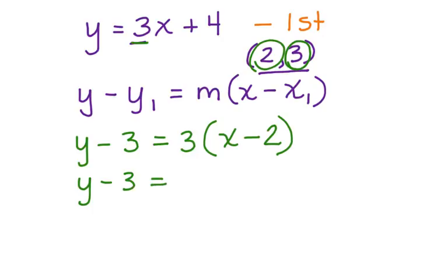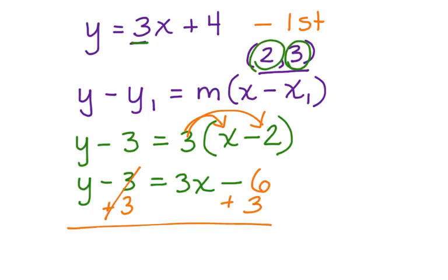y minus 3 equals 3 times x, which is 3x, minus 3 times 2, which is 6. Now, we want to get y alone, so the form of the equation will be in slope-intercept form. So we're going to add 3 to both sides. These cancel. y is equal to 3x minus 3.